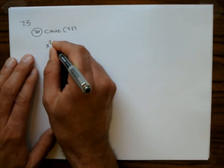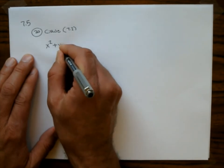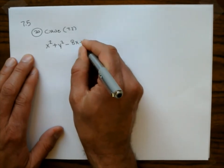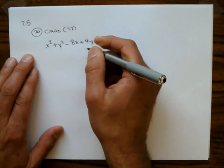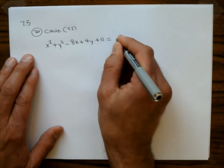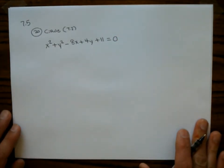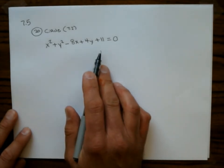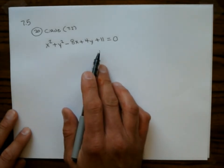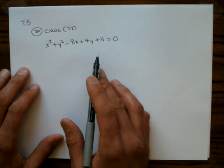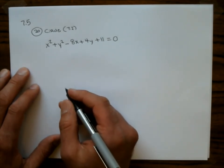The equation is x squared plus y squared minus 8x plus 4y plus 11 equals 0. We want to put this in standard form, find the radius and center, and graph it. To put it in standard form, we complete the square.